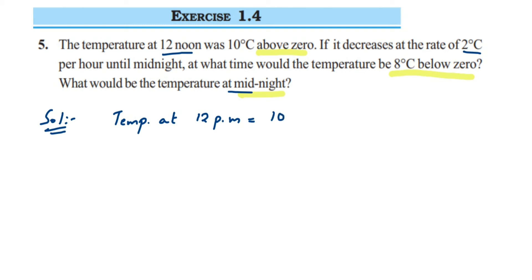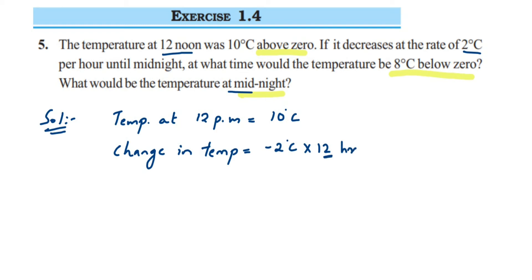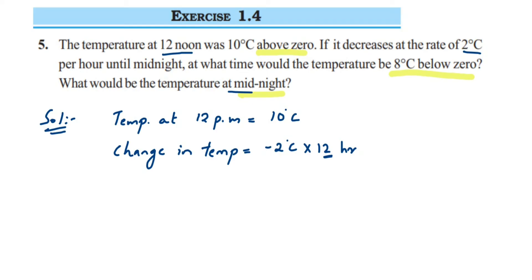We need to find the temperature at midnight, that is 12 a.m. The temperature is changing every hour — the change in temperature is minus 2 degrees Celsius. Since there is a 12-hour gap from 12 p.m. to 12 a.m., we multiply by 12 hours. Instead of subtracting 2 repeatedly, we calculate: 12 × (−2) = minus 24 degrees Celsius. That is how much the temperature has decreased over those 12 hours.